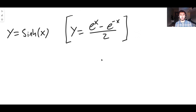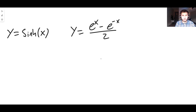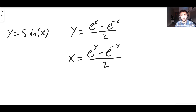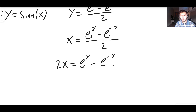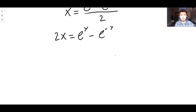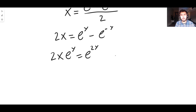To find an inverse function, we replace the x's with y's and the y's with x's — swap everything around. This is how you find the inverse function of any function. Now we want to make y the subject again, so we need to rearrange. Multiply both sides by 2: 2x = e^y − e^{−y}. Then multiply everything by e^y: 2x·e^y = e^{2y} − 1.